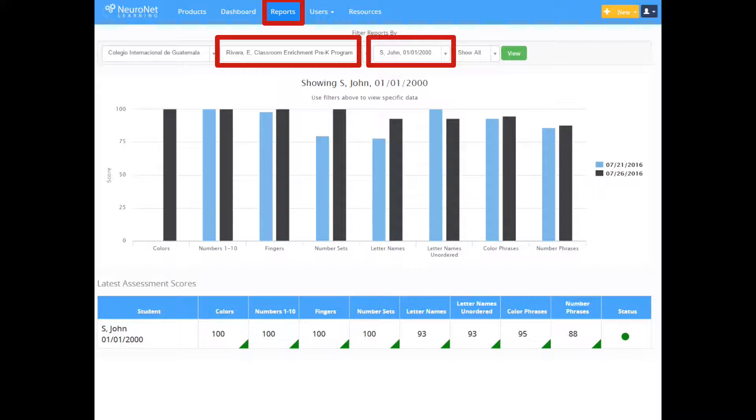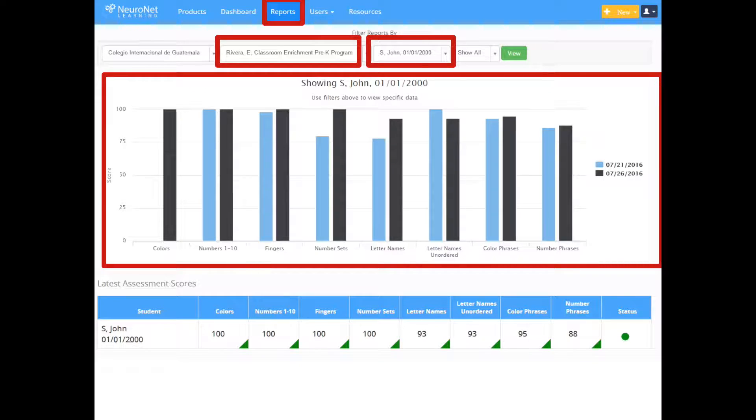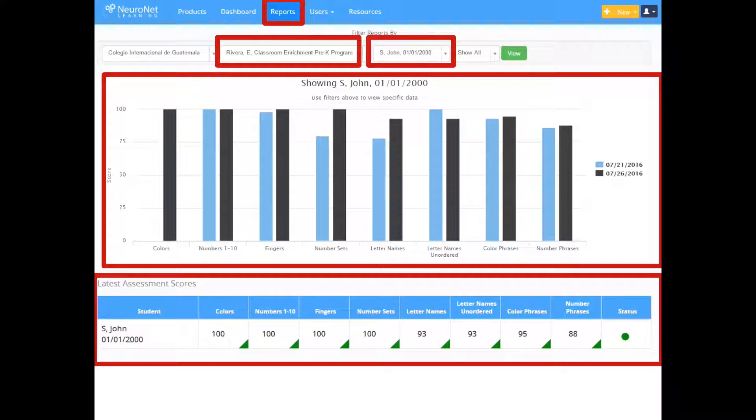To drill down you can select an individual student. This will show graphs. If the test has been taken more than once, the first and last times it was taken will show side by side on the bar graph so you can evaluate growth in different skills. The color-coded skills data on the bottom will always be based on the last time the test was taken.